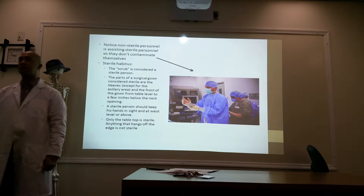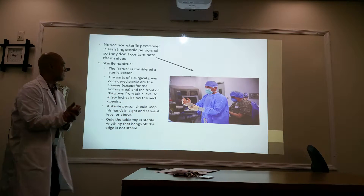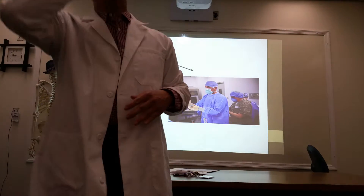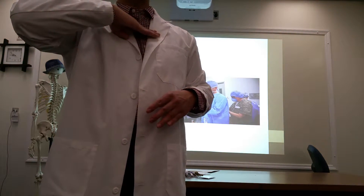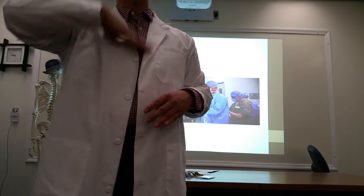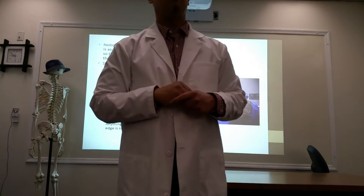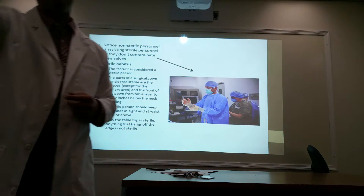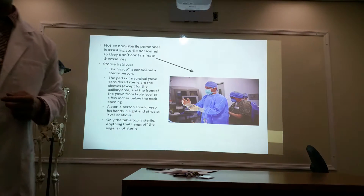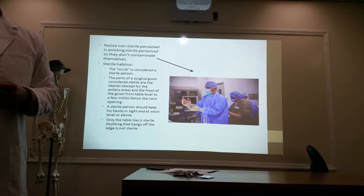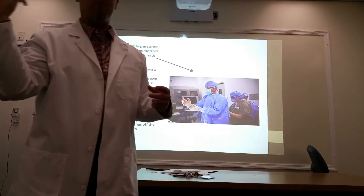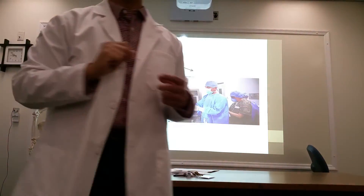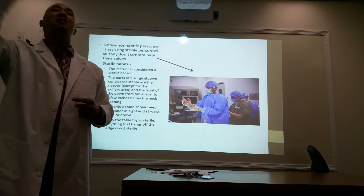The parts of the surgical gown considered sterile are the sleeves — except for the axillary area and the cuffs — and the front of the gown from table level to a few inches below the neck. Anything above that is not sterile. So if you have an itch or you're sweating, you see in movies another assistant patting them on the head or scratching their face. They'll even push your glasses back on your face because you can't touch anything from there up.